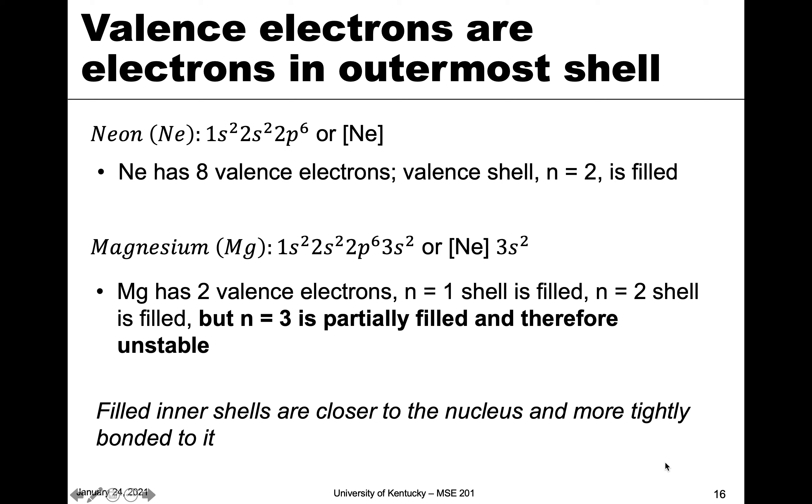Valence electrons are obviously electrons, but they're defined as those in the outermost shell. When we say shell, we're talking about that principal quantum number. If we go here to neon, we have two shells, one and two.